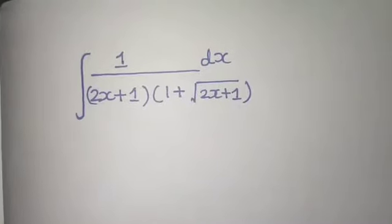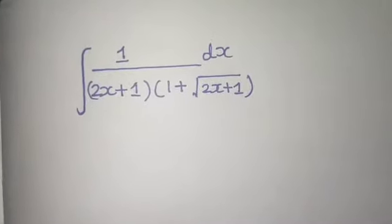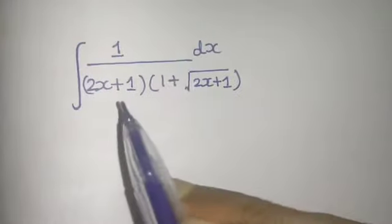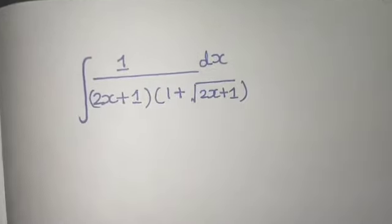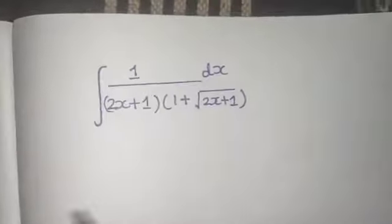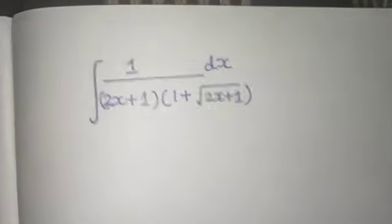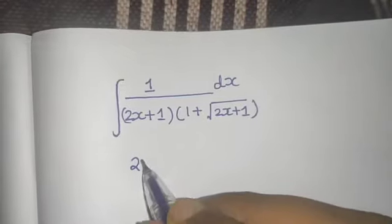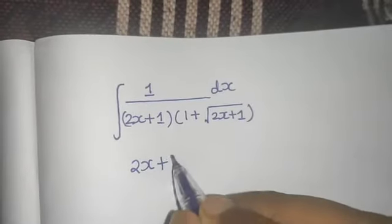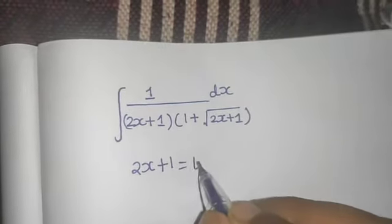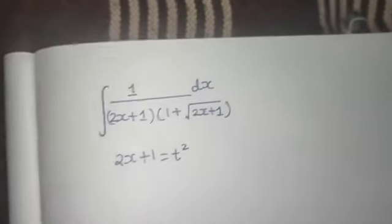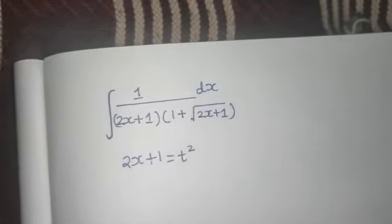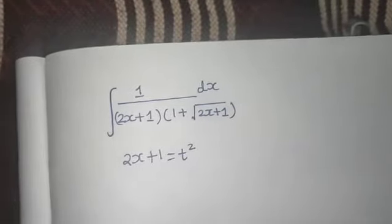Let's see a question from integration. As you can see, 2x plus 1 appears at two places in this question. So what we can do is substitute 2x plus 1 as t squared. Why t squared? Because it is inside the root also. If we do so, there will be one benefit.